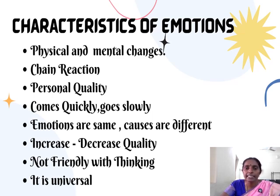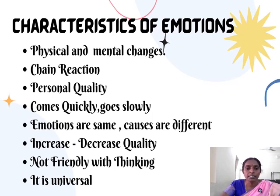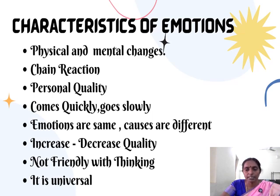In chain reaction, we can understand that one type of emotion can give birth to a number of other similar emotions. So emotions play a vital role and continuously lead to related emotions.